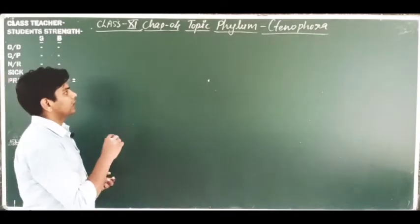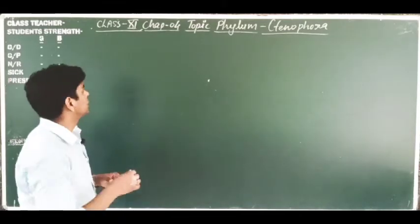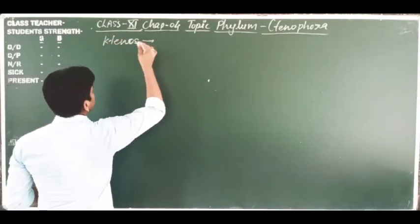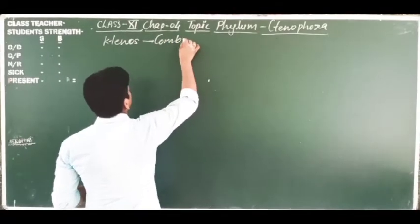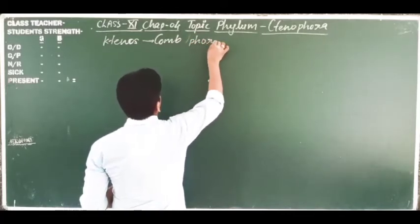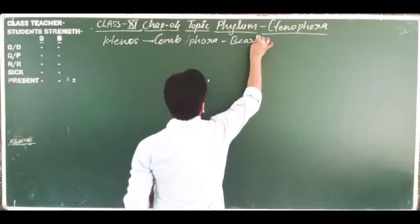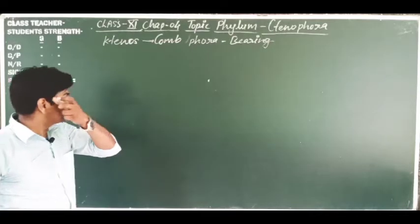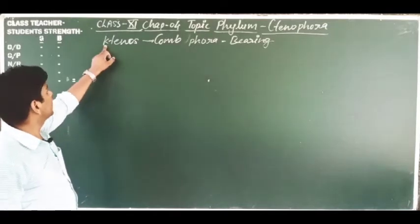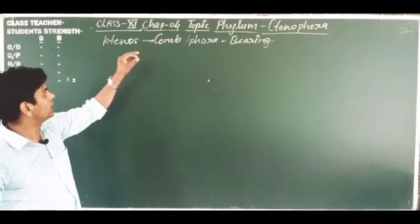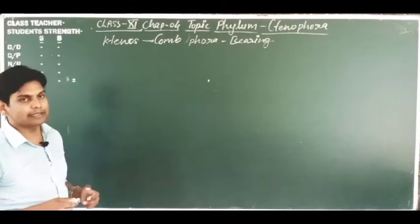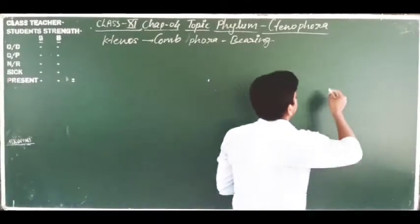First, let's discuss why this phylum is named Ctenophora. Ctenophora means 'cteno' or 'ctenos,' which means comb, and 'phora' means bearing. Note that in writing, the 'C' is silent because it is derived from the Greek term 'ctenos.' So, ctenos means comb and phora means bearing — these animals bear comb-like structures.